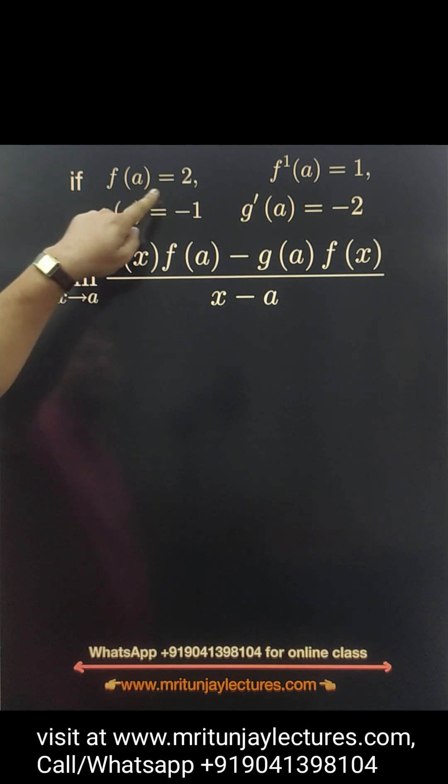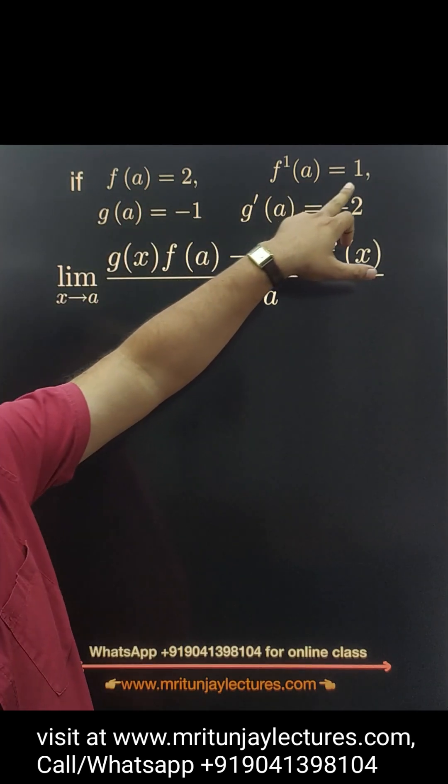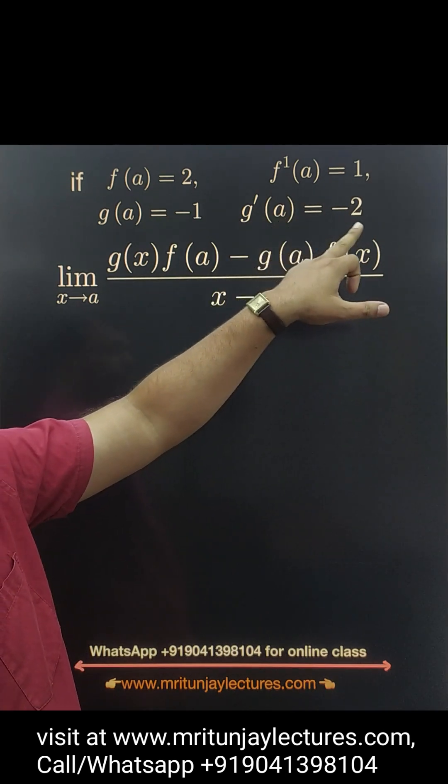Here given f(a) is equal to 2, g(a) is equal to minus 1, f prime a is equal to 1, g prime a is equal to minus 2.